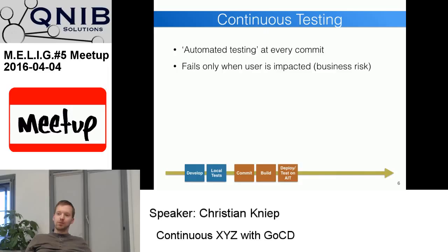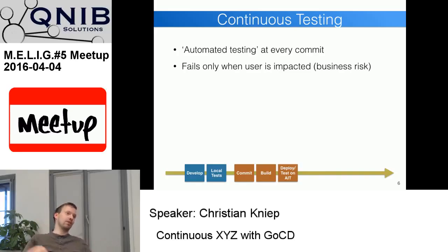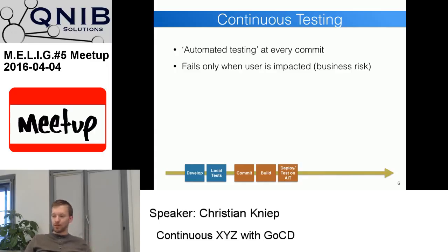The next was continuous testing — basically automated testing at every commit. You commit to your central repository, this triggers a build and then tests in a staging environment. This testing only checks for user impact or business risk, so a PEP 8 failure might still pass. It's highly dynamic depending on your environment, but according to Wikipedia it only fails when there's a significant business risk.